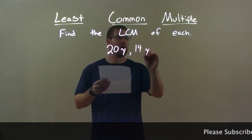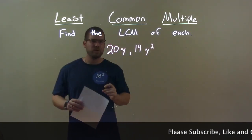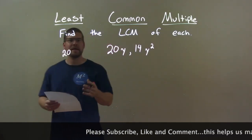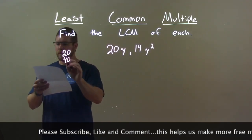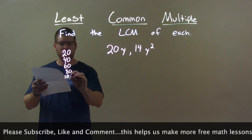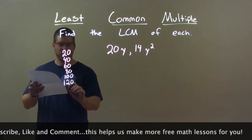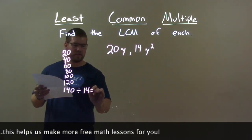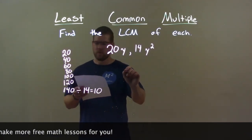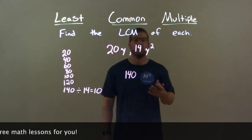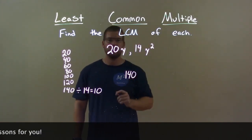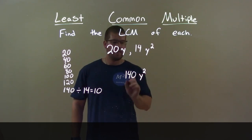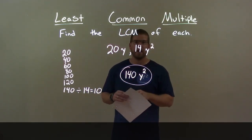20y and 14y squared. First I deal with the numbers, 20 and 14. The largest is 20. I start with 20 and go through its multiples to find which one is divisible by 14. 20, 40, 60, 80, 100, and 120 are not, but 140 is — 140 divided by 14 is 10. So the number we're looking for is 140. Now for the variables: we have one y here and two y's there. The largest is y squared. So my final answer is 140y squared.